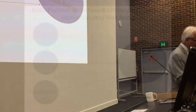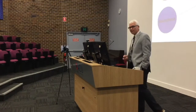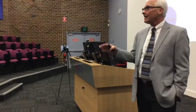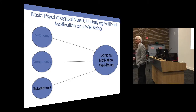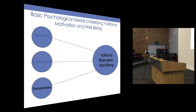Our focus in SDT is how we can nurture inner motivation and engagement. The theory comes down to some key factors — if supplied in a work or educational environment, people will thrive, be more engaged, and be highly volitional. Those three factors are: support for people's sense of relatedness, support for their sense of competence, and support for their autonomy. These are three things we call basic psychological needs, and we argue they are universal across the globe.